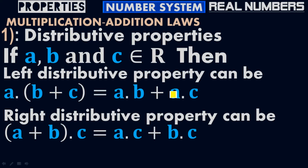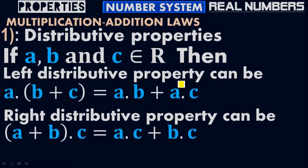In the left distributive property, we take the addition of b and c and multiply by a on the left side. In the right distributive property, we take the addition of a and b and multiply by c. On the right side, the left distributive property gives a times b plus a times c, while the right distributive property gives a times c plus b times c. These are the two distributive properties under multiplication addition laws.